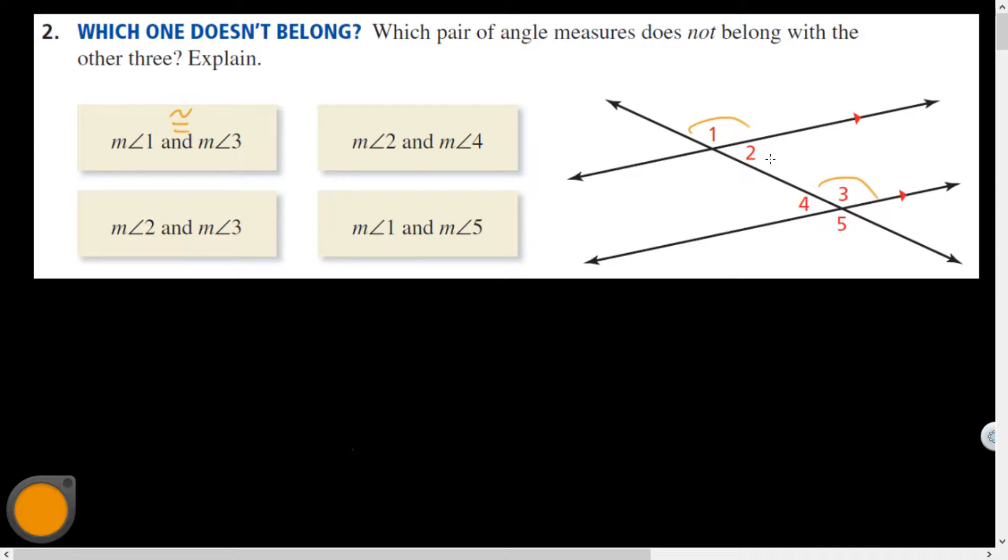Angles 2 and Angle 4, those are alternate interior, and therefore congruent to one another, right Isaiah?